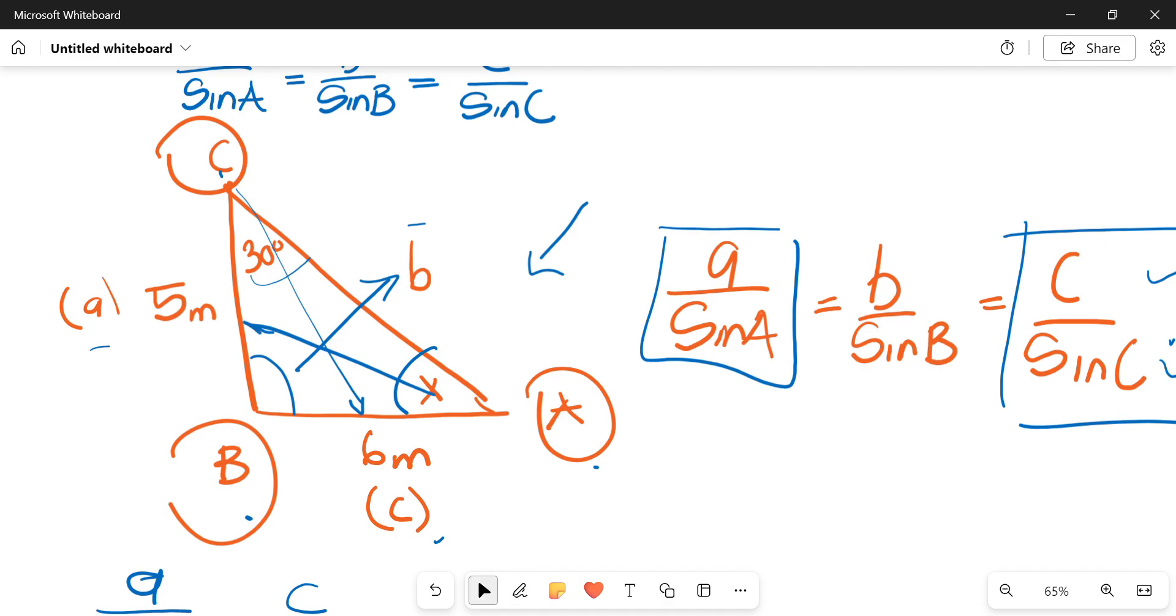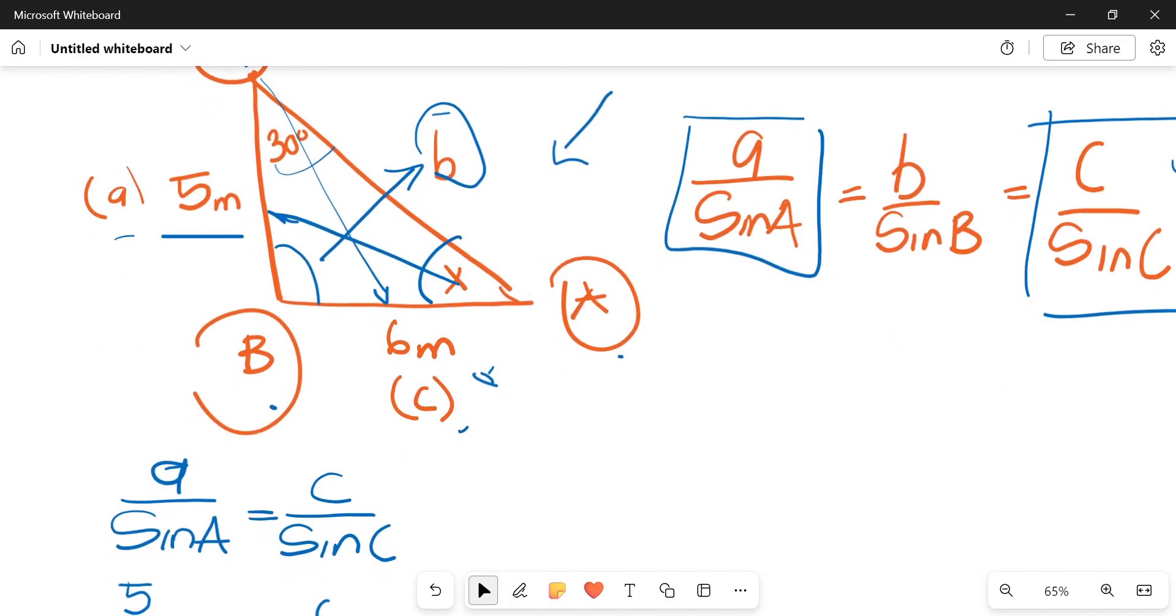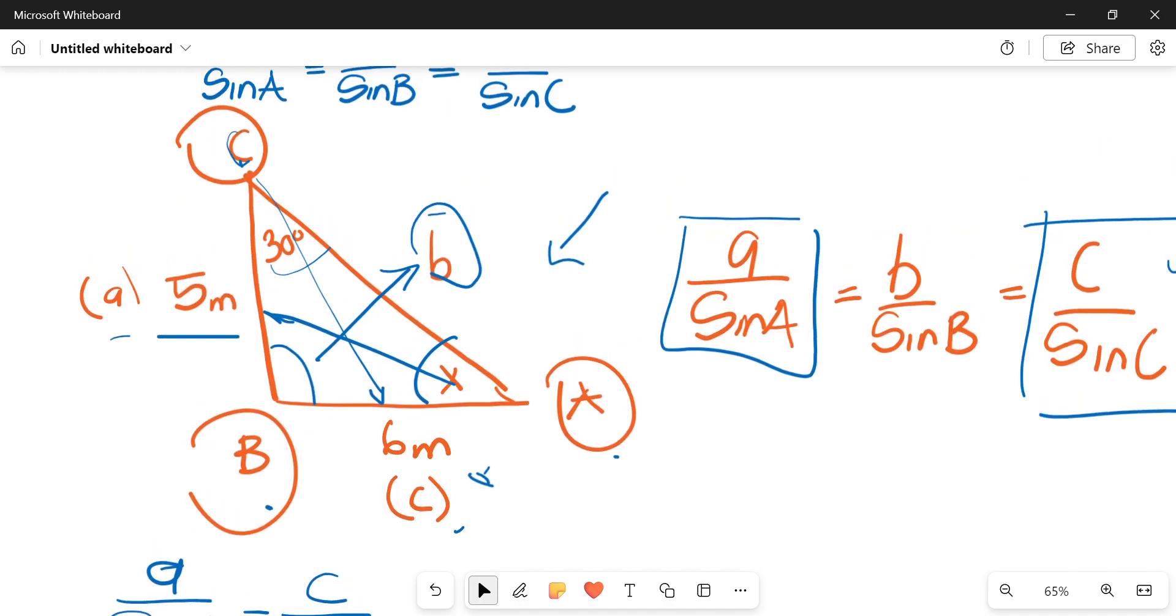Then the given sides or the known variables on here are the length of A, which is 5 meters, and the length of C, which is 6 meters. Then the length of B is unknown. We have the angle C, which is known at 30 degrees. Then we have angle A, which is X, it's an unknown variable. Then angle B is also an unknown variable.